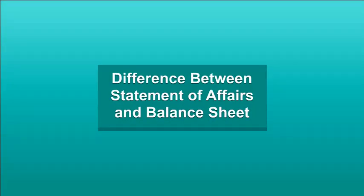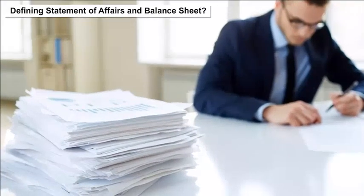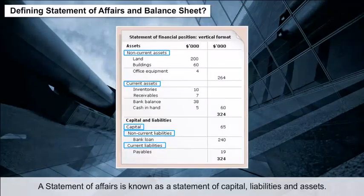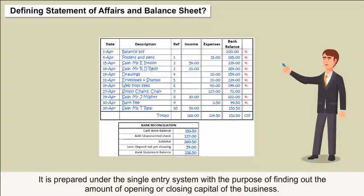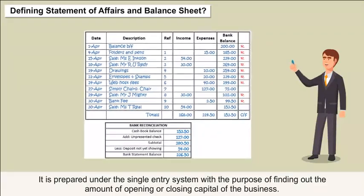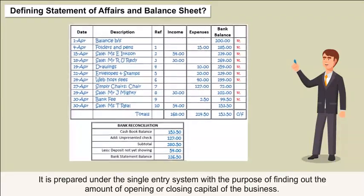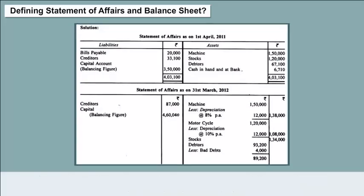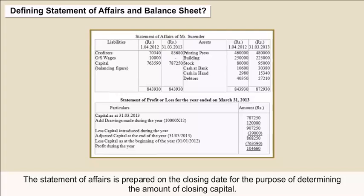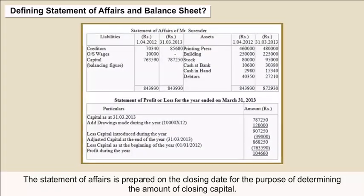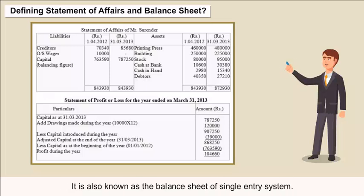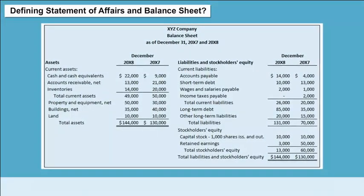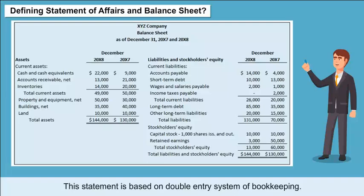Difference between statement of affairs and balance sheet: A statement of affairs is a statement of capital, liabilities, and assets, prepared under the single entry system with the purpose of finding out the opening or closing capital of the business. It is prepared on the opening date to determine opening capital and on the closing date to determine closing capital. It is also known as the balance sheet of the single entry system. A balance sheet is a statement of a company showing assets, liabilities, and equity, based on the double entry system of bookkeeping.